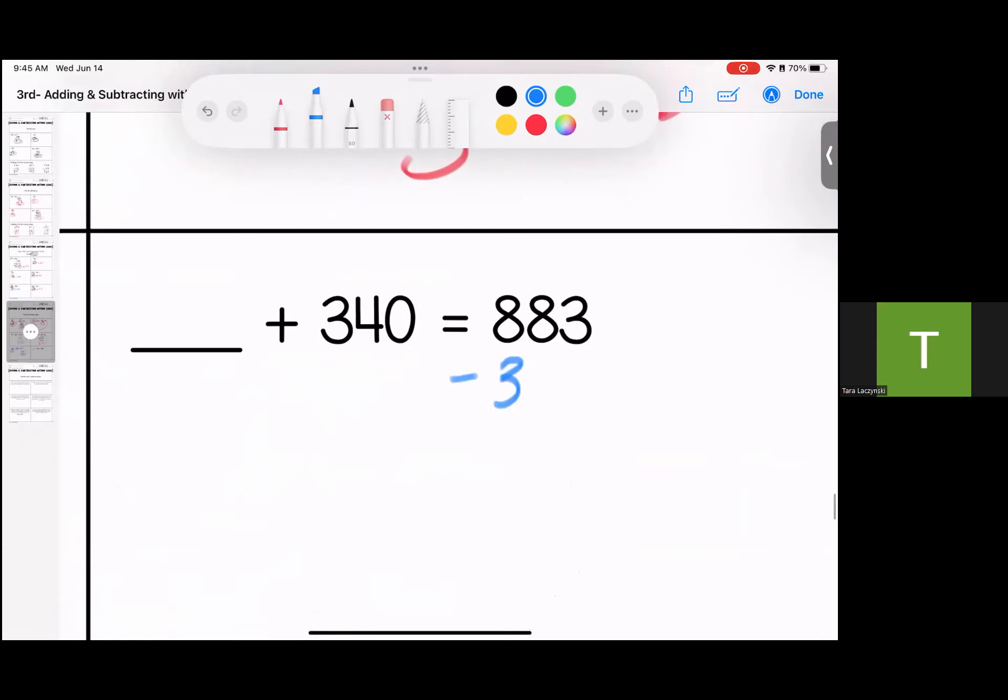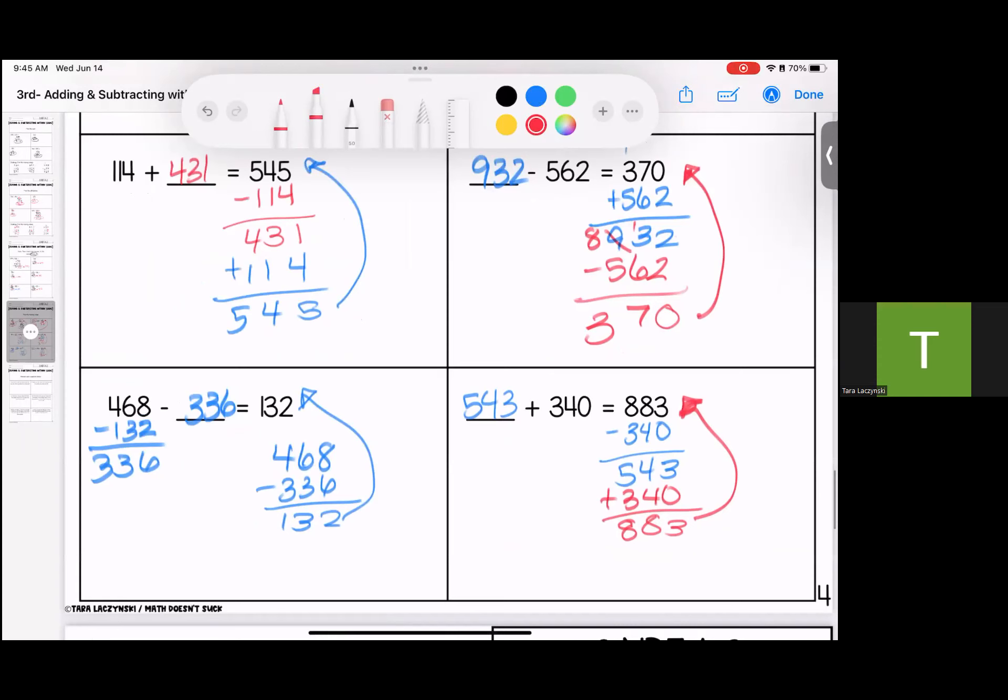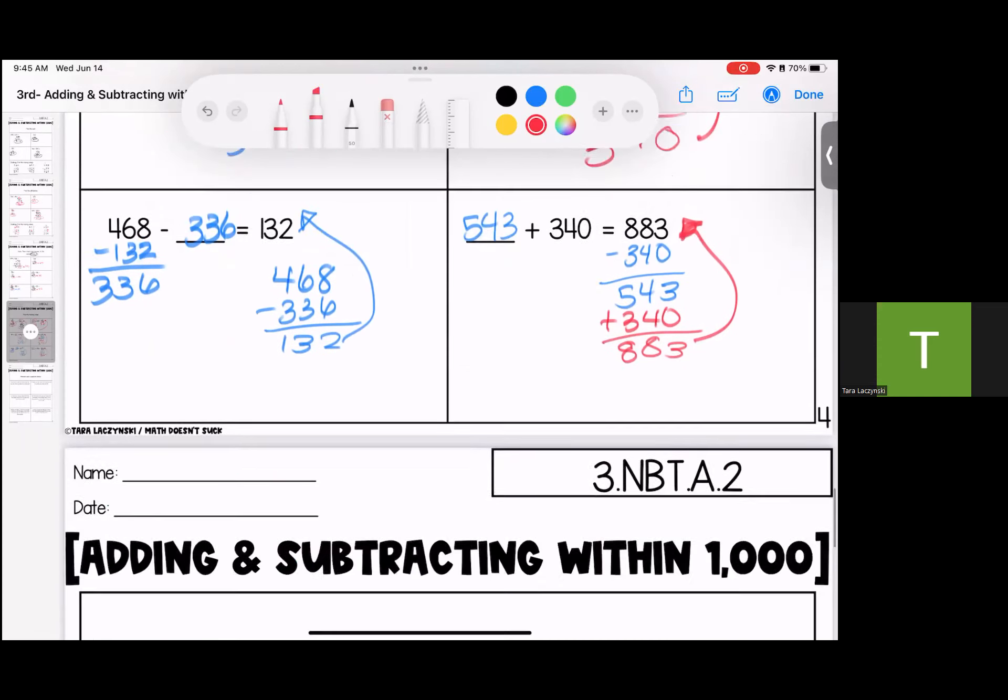Over here, opposite operation, let's subtract. We should be missing 543. Let's check it. It's a match. Any questions on this page? Bring them to class or send me a message.